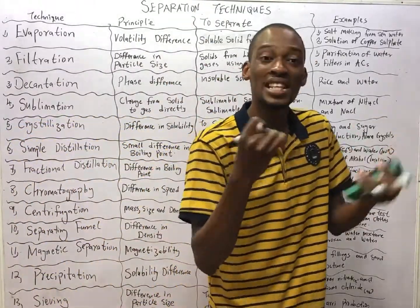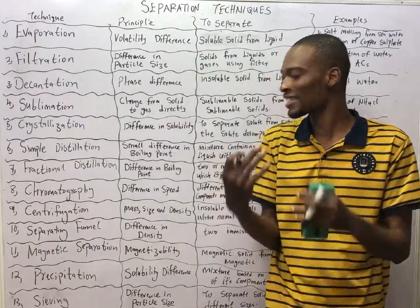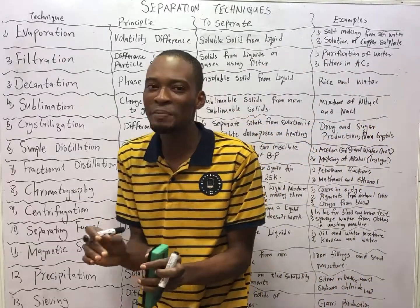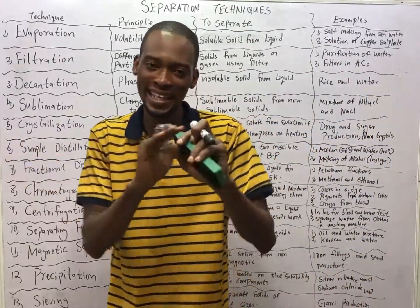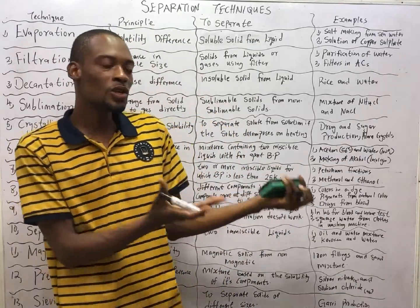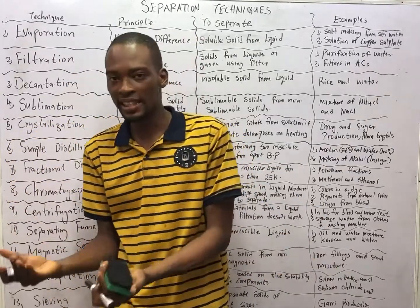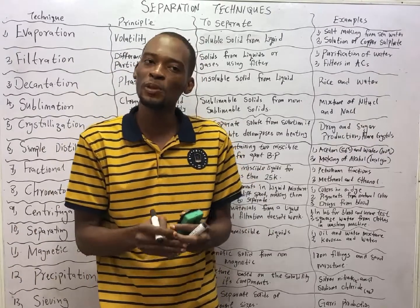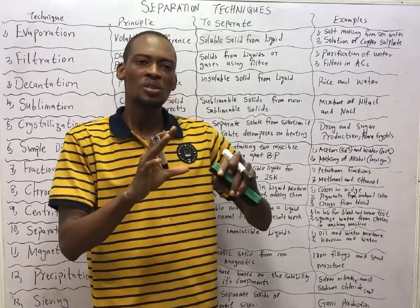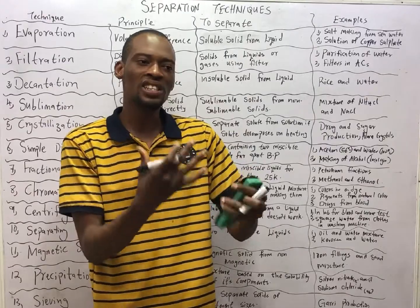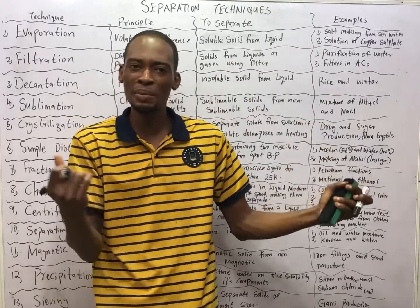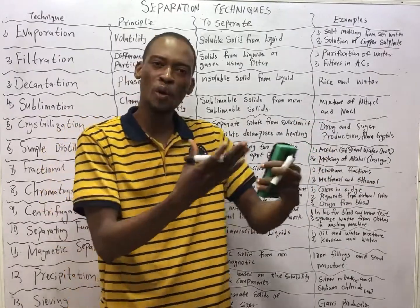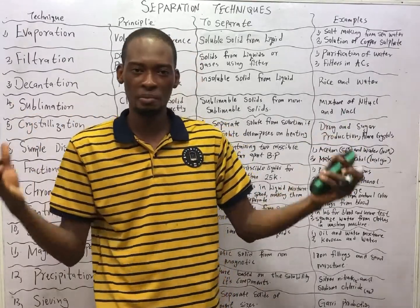Mixture is different from compound in the sense that a compound contains two or more elements combined chemically. Sodium is an element, chlorine is an element — when you combine them, you form sodium chloride; it is a compound. The characteristics of a compound are different from the characteristics of each of the elements making up the compound, and you cannot separate compounds by physical means.